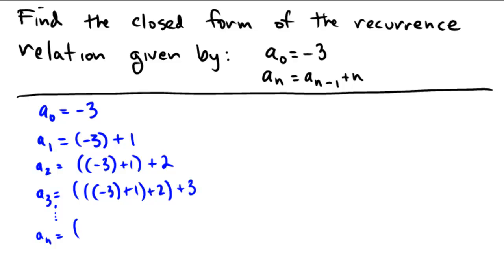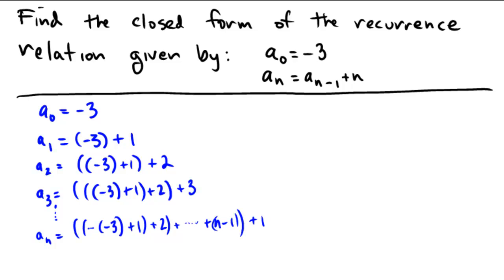Well, it's looking like we're going to have a whole bunch of parentheses with a negative 3 right there, and they're going to have a plus 1, a plus 2, plus dot dot dot, plus n minus 1, and then finally we're going to add on that nth one. So can we find a way to write this in a closed form?